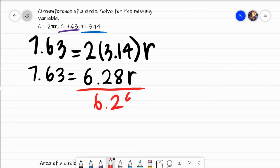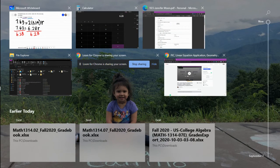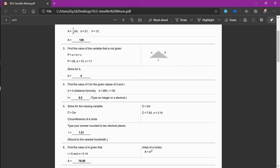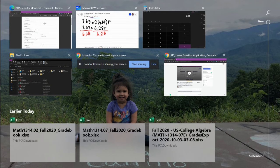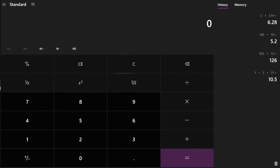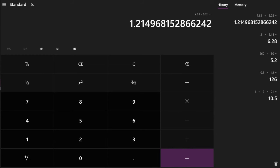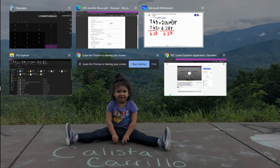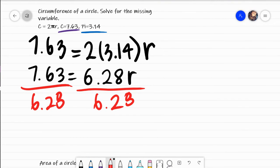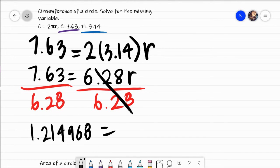Solving for r, I would divide by 6.28. So 7.63 divided by 6.28 equals 1.21496815. This one will tell you to round. I believe it might say to round to the nearest hundredths. So let's go ahead and write down a few. Those cancel and I get r.